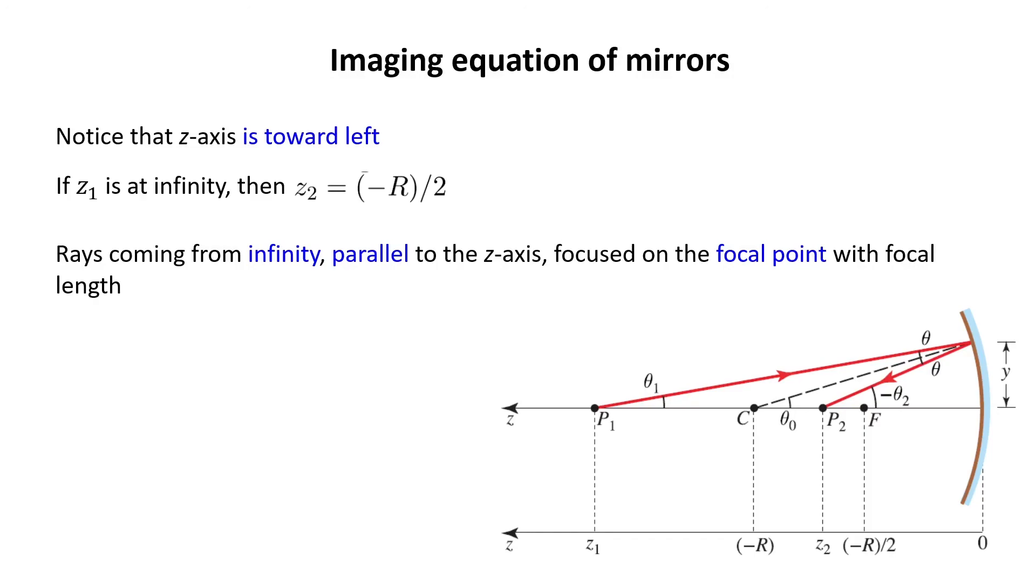Okay, so I can conclude that the rays coming from infinity are almost parallel to the z-axis and focus on a focal point with focal length minus R over 2, because when P1 goes to infinity, theta 1 becomes almost 0, which means that the ray is almost parallel to the axis.